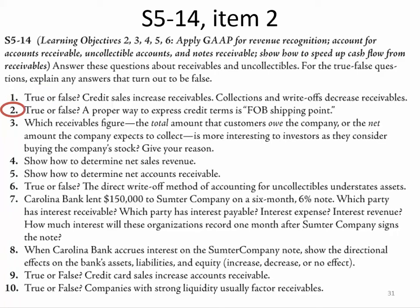The next one, true or false: a proper way to express credit terms is FOB shipping point. That is false. An example of credit terms would be 2/10 net 30. FOB shipping point refers to how we're shipping it, not the credit terms.